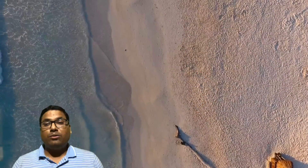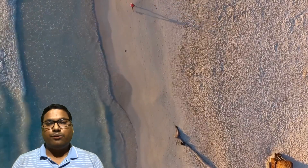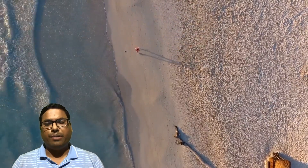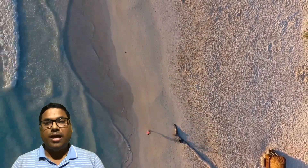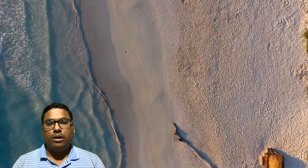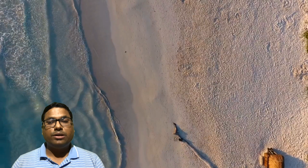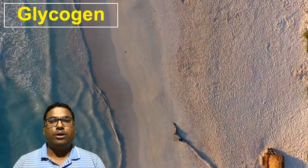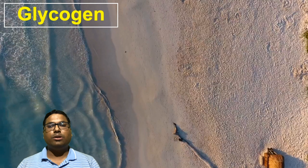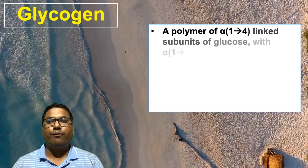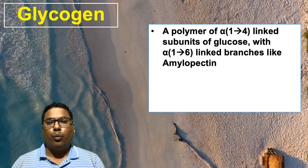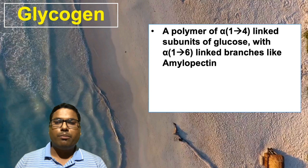The next polysaccharide is present in many animals including us — it gives us energy when we are fasting, such as during a morning workout. This molecule is the very important polysaccharide glycogen. Glycogen consists of a polymer of alpha 1,4 linked glucose subunits, and also